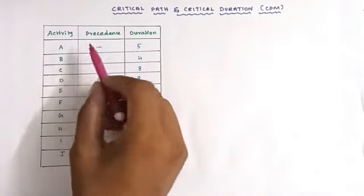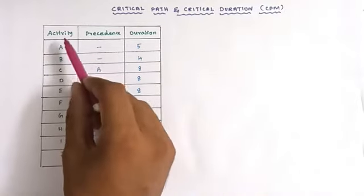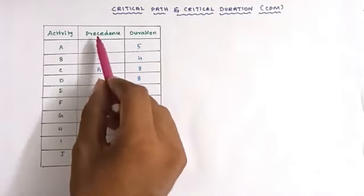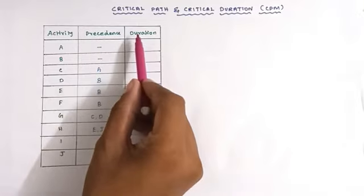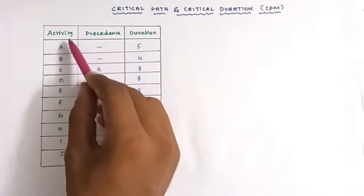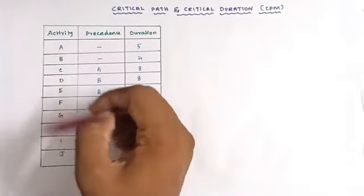So take this problem as an example. The activity and preceded relationship are given along with the duration. So the activities are A to J, meaning there are 10 activities.